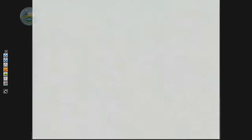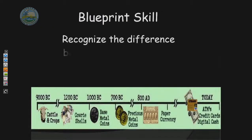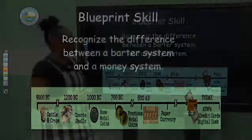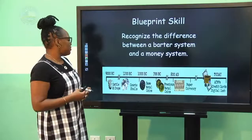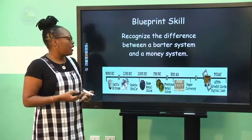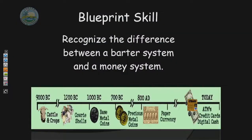So from this video you would have depicted three things. Number one, you should have come up with a definition for the term barter. Two, we should be looking at the timeline seen in the video, and what they actually used for barter back then — copper, silver, shells, metal, precious metal, and cows and cattle.